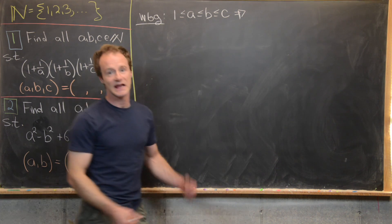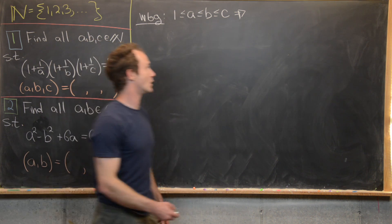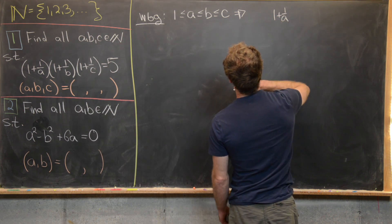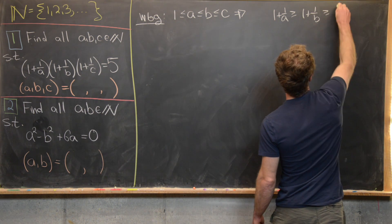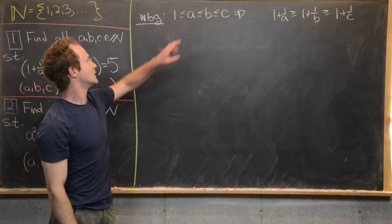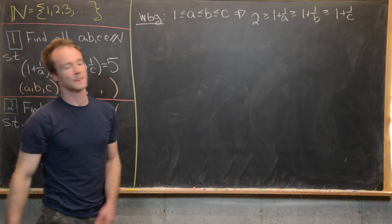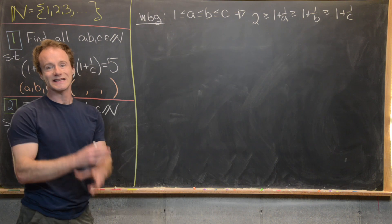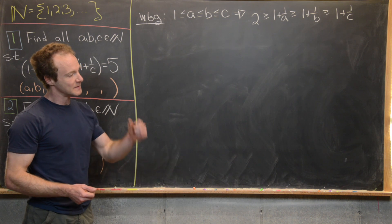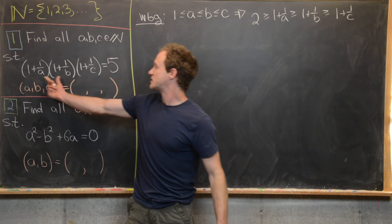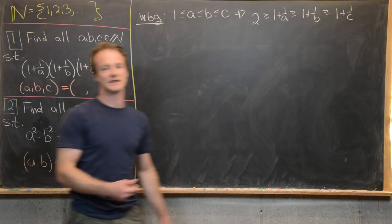We can do that by taking the reciprocal and then adding one, but taking the reciprocal is going to change the order of this inequality. So notice we're going to have (1 + 1/a) ≥ (1 + 1/b) ≥ (1 + 1/c). And each of those is going to be bigger than 1 + 1/1, in other words, two. So now we want to get some sort of bound on a, the smallest such number.